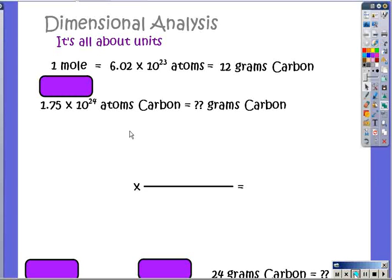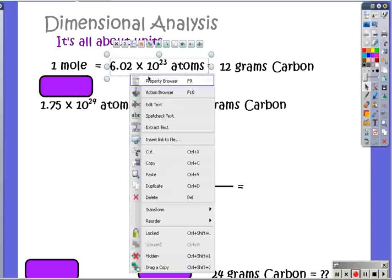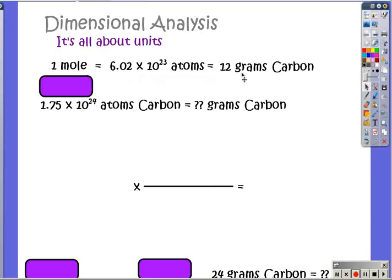This one I've changed things a little bit because now I'm going to be doing something with atoms. This is part of our relationship. One mole, 6.02 times 10 to the 23rd atoms, and 12 grams of carbon. So it's part of our relationship. So here I want to change from atoms to grams. Let's see how you do. Pause this and try and work it out.